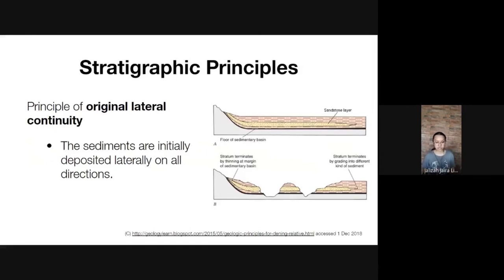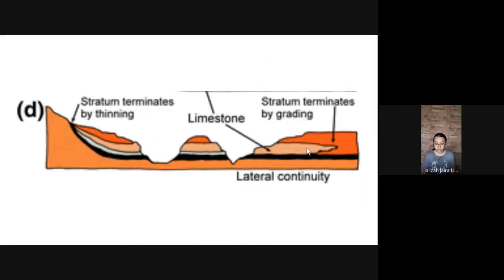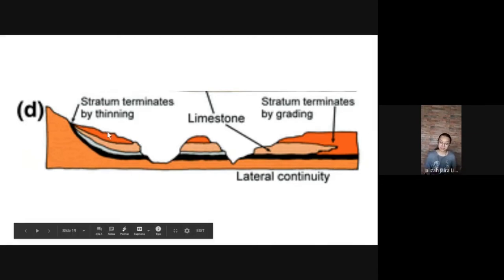We also have the Principle of Original Lateral Continuity: sediments are initially deposited laterally in all directions. So regardless of erosion, two separated layers of the same color or type are still the same age — they were originally deposited in one horizontal layer, but different geological events later separated them. We follow this principle to determine the relative age of rocks based on their layers.